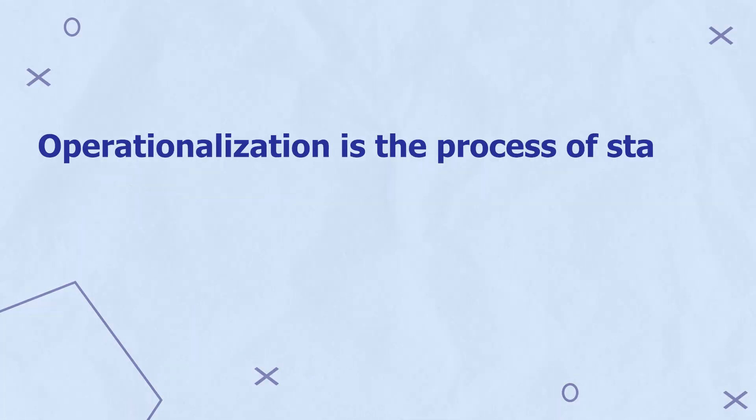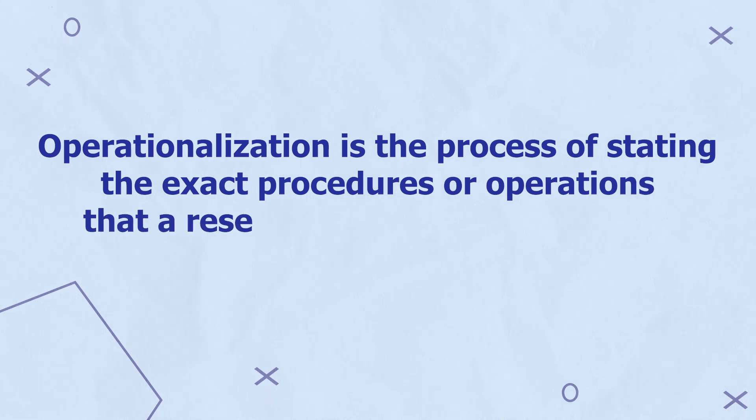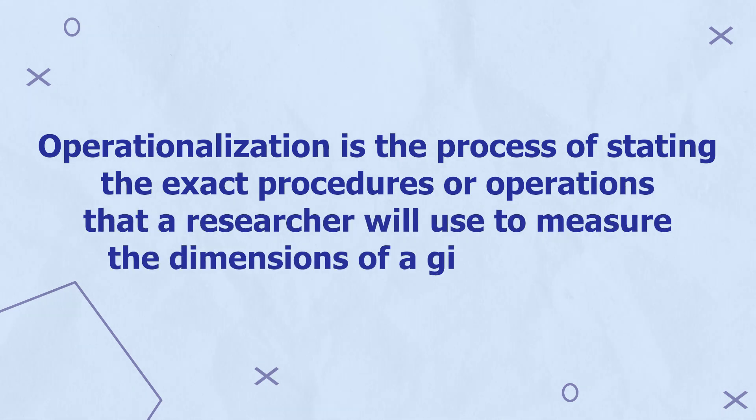The definition of a concept through the process of conceptualization will not be enough. This is why we need to come up with a strategy to measure the different dimensions of a concept. Operationalization is the process of stating the exact procedures or operations that a researcher will use to measure the dimensions of a given concept. In qualitative research, operationalization includes identifying the attributes, such as the qualitative characteristics of a given dimension of a concept, and the nature of the relationship between the different attributes referred to in the dimension.